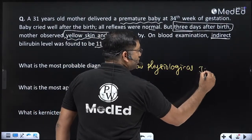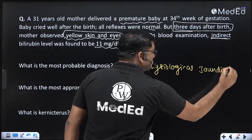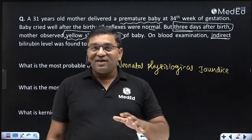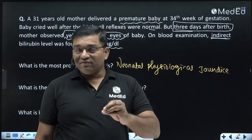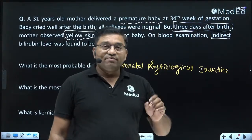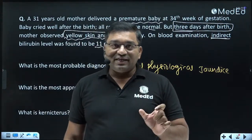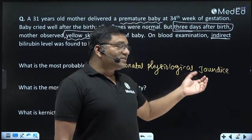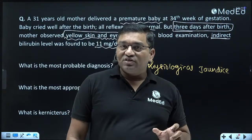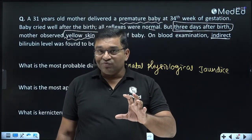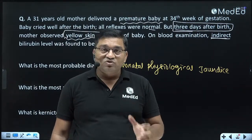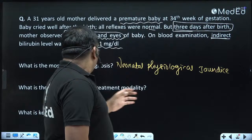What do you mean by jaundice? Jaundice means yellowish discoloration of skin and sclera because of increased bilirubin level. Why does it appear first in the eyes? Because of the contrast from the white color of the sclera, and also because the sclera has elastic tissues and bilirubin has affinity with elastic tissue. That is why it appears first in the sclera.